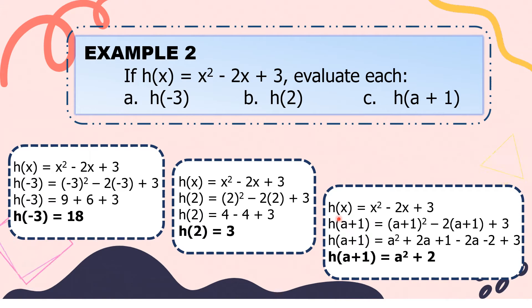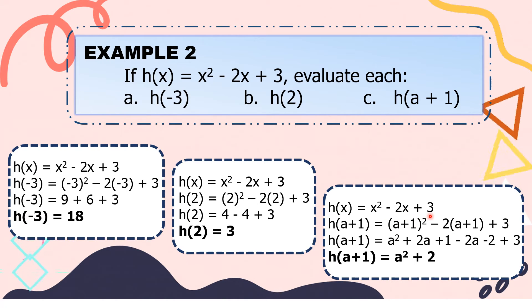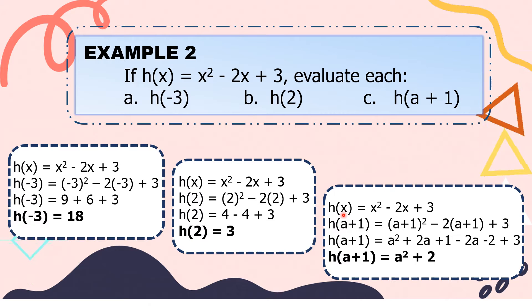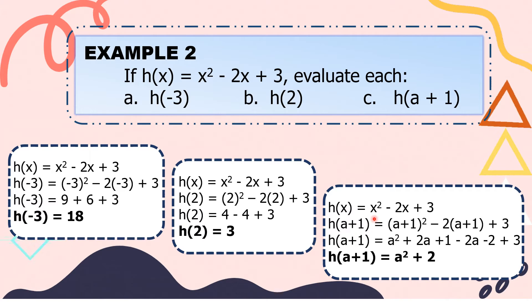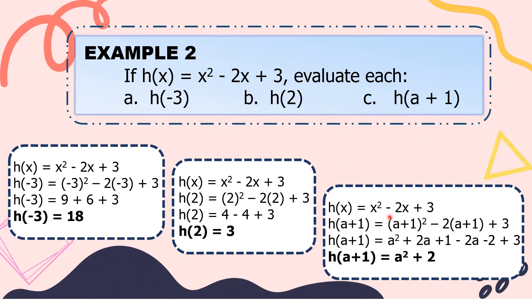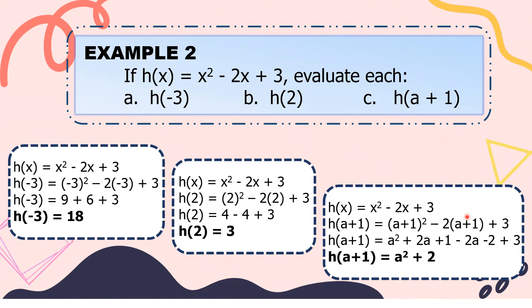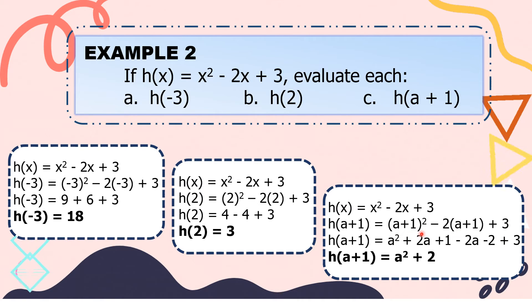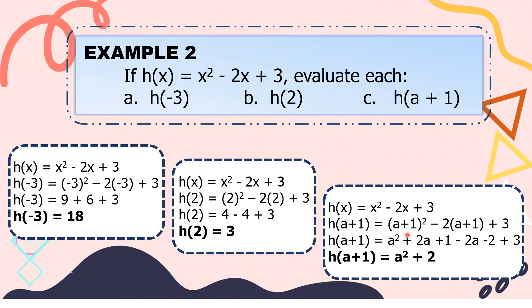For letter C, our function is h of x equals x squared minus 2x plus 3. We substitute all x's with a plus 1. So h of a plus 1 equals (a plus 1) squared minus 2 times (a plus 1) plus 3. Now, (a plus 1) squared means (a plus 1) times (a plus 1).